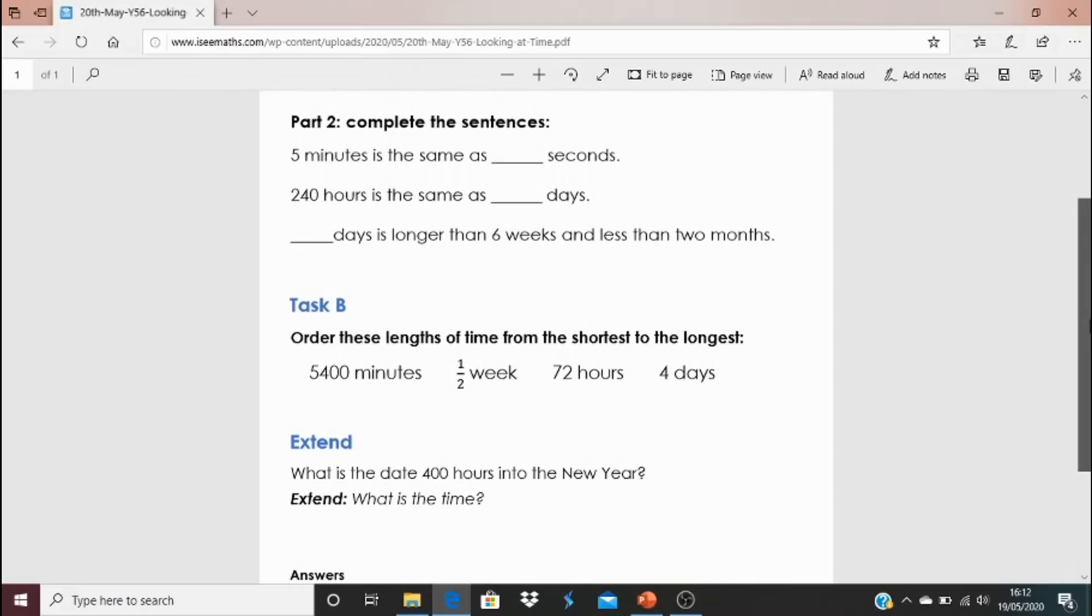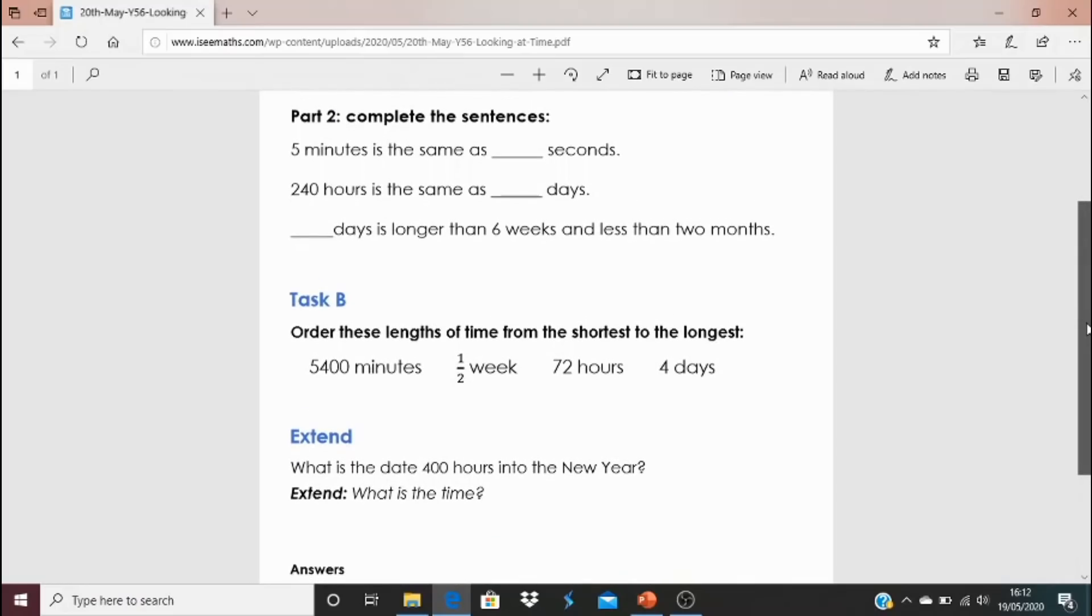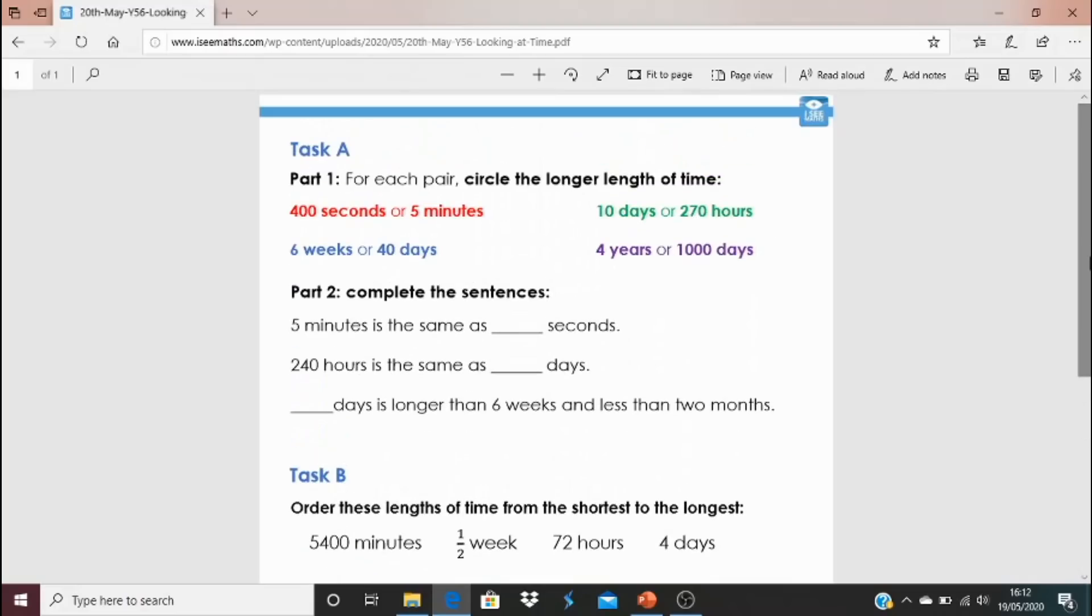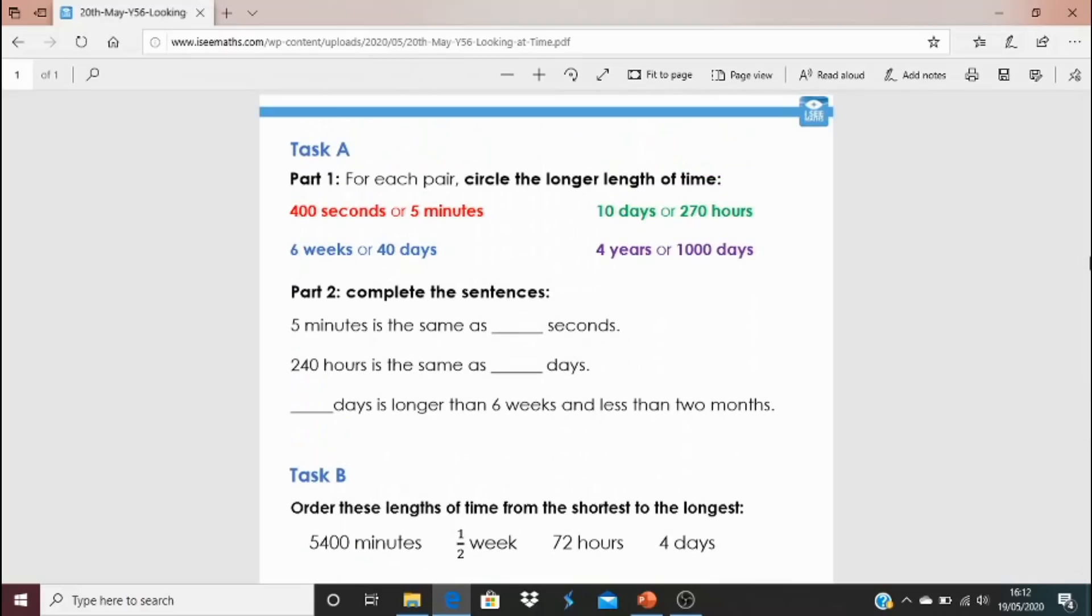The extend task is a really challenging one. Feel free to use a calculator for that one. You've got to think really deeply about this one. What is the date 400 hours into the new year? So that moment that it's new year and then 400 hours after that, what will the date be? The extend to the extend is, what will the time be? And how do you know? Answers are at the bottom. I hope you really enjoy this challenge and I'll see you tomorrow.